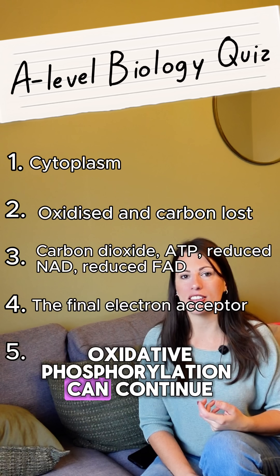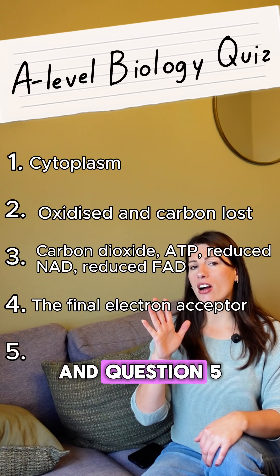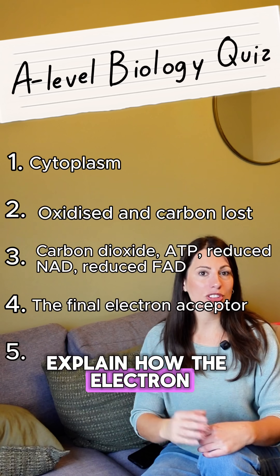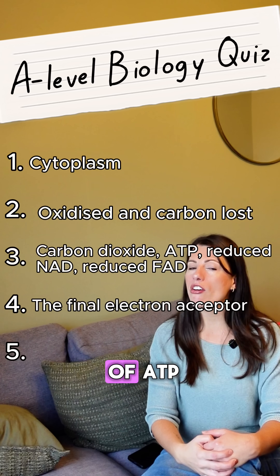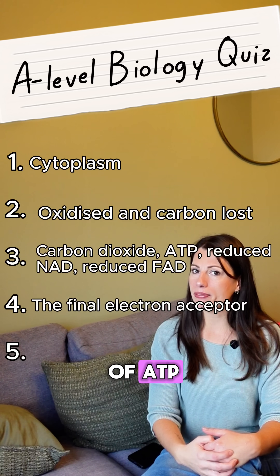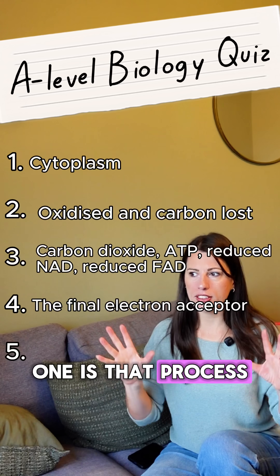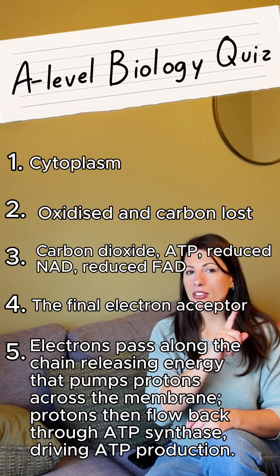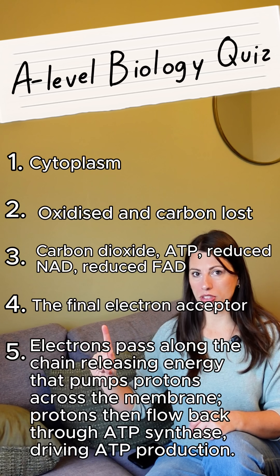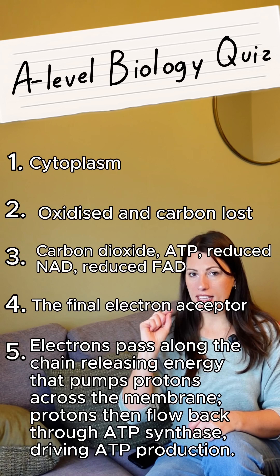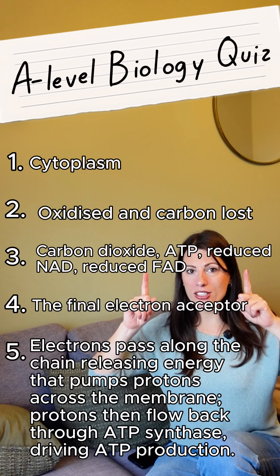Question five: explain how the electron transfer chain results in the production of ATP. That process is chemiosmosis. Electrons pass from protein to protein along the electron transfer chain, and that releases energy to pump protons from the mitochondrial matrix to the intermembrane space.